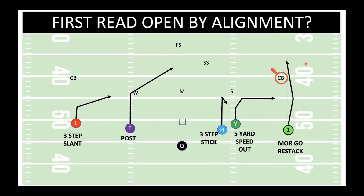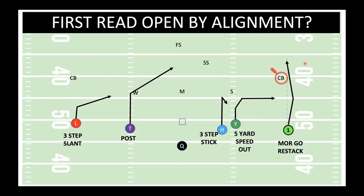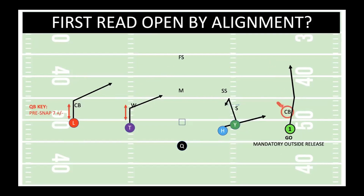Now one note I'd like to make is that regardless whether he is open by alignment — like he is here — or he's not open by alignment like he is against cover three, we still want to start with our eyes on this cornerback after you snap it. Because he could be disguising something: in this scenario he could be dropping down to cover two in disguise, or in this scenario he could be pretending to play man and then bail out at the very last second to get to his deep third.